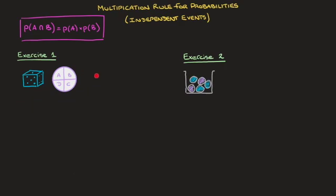Let's work through the first example. The experiment here consists of two things: rolling an unbiased die, as well as spinning the spinner we have here. I'm interested in two events. The first event, which I'll call A, is to roll a 5 with the die. The second event, which I'll call B, is for this spinner to stop spinning on the letter B — so the spinner stops on B. You can imagine a pointer pointing towards the spinner, and for event B to occur, it needs to stop with the arrow pointing towards B.